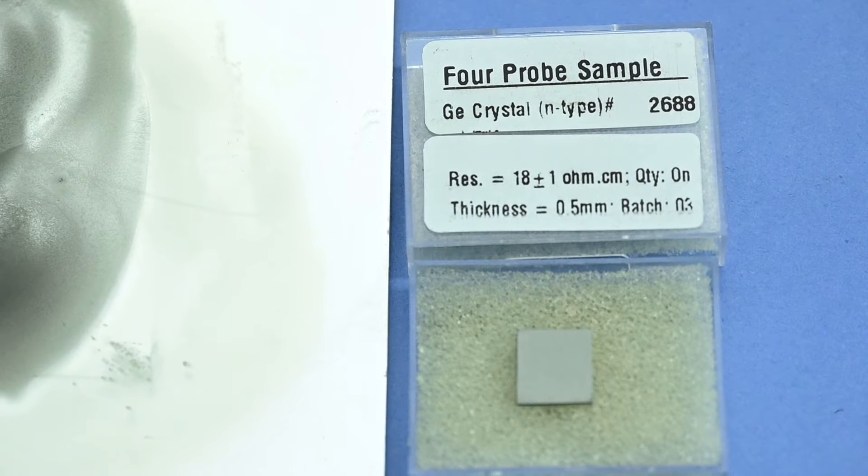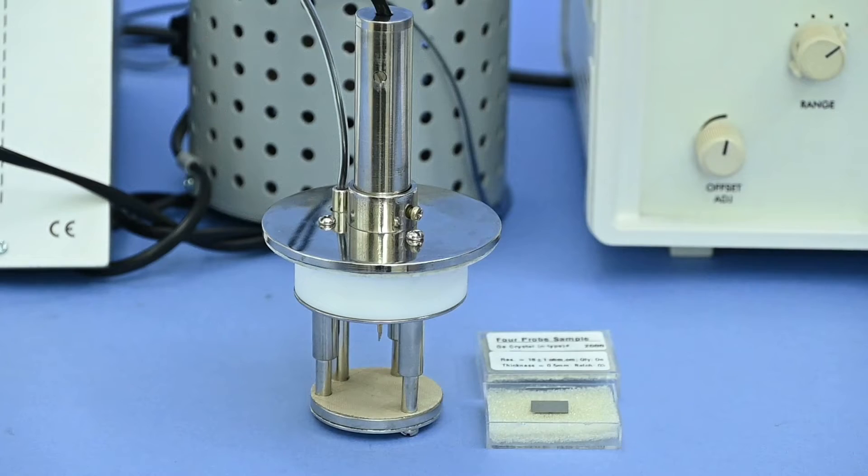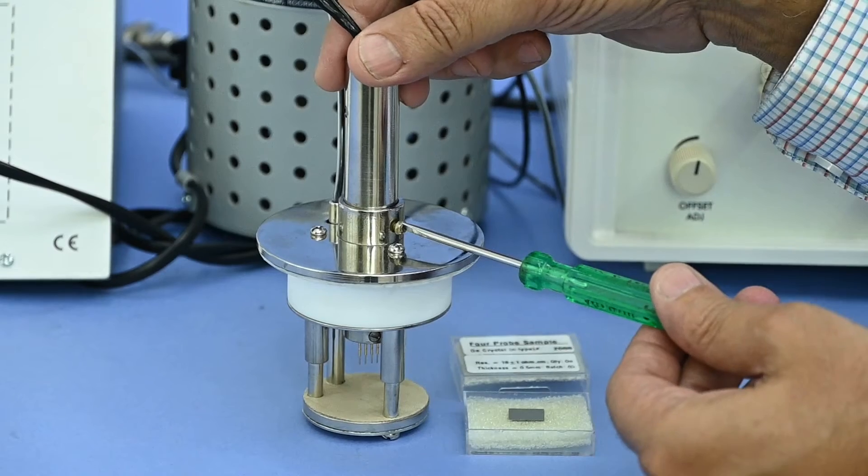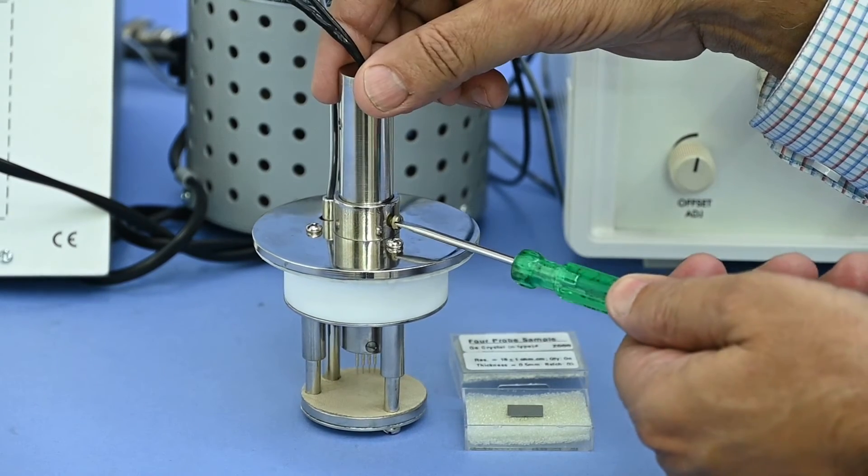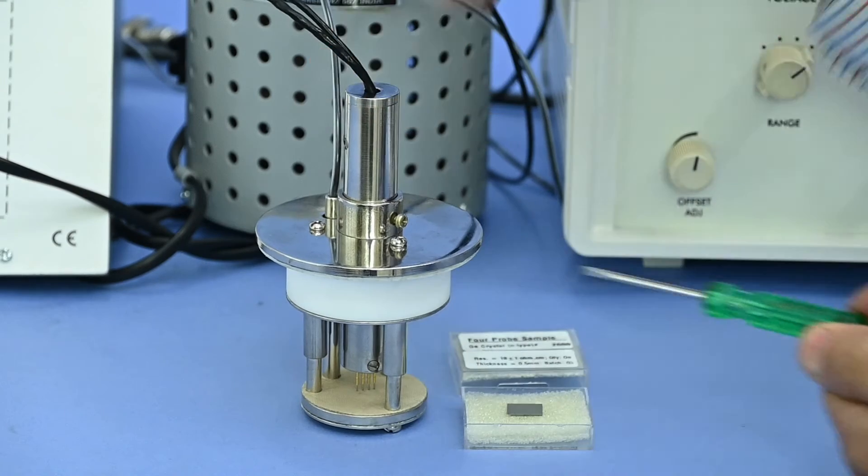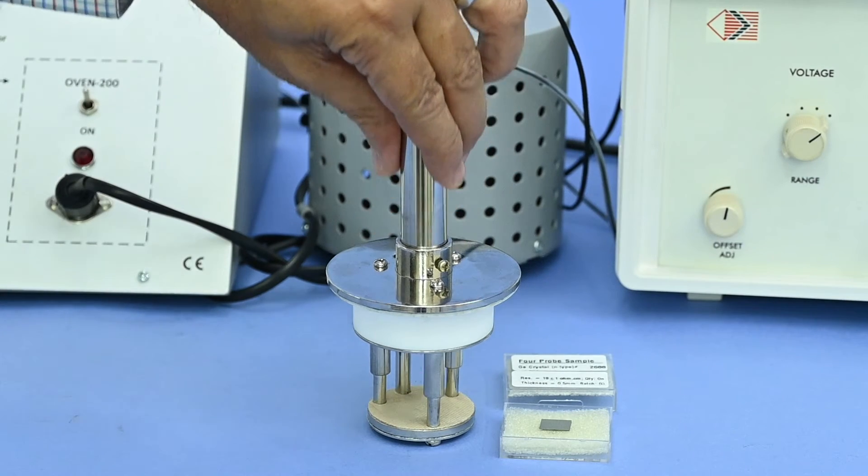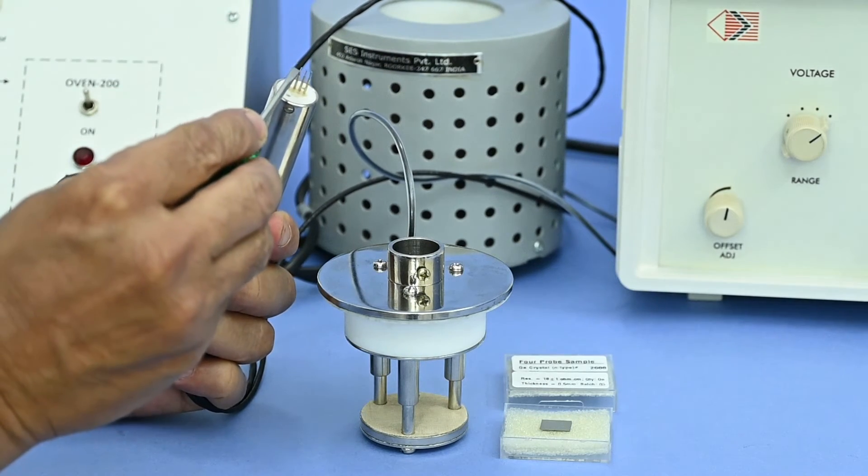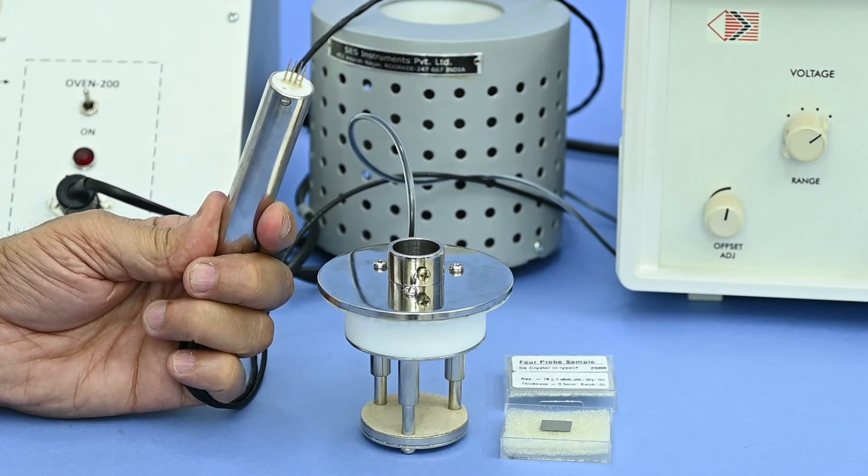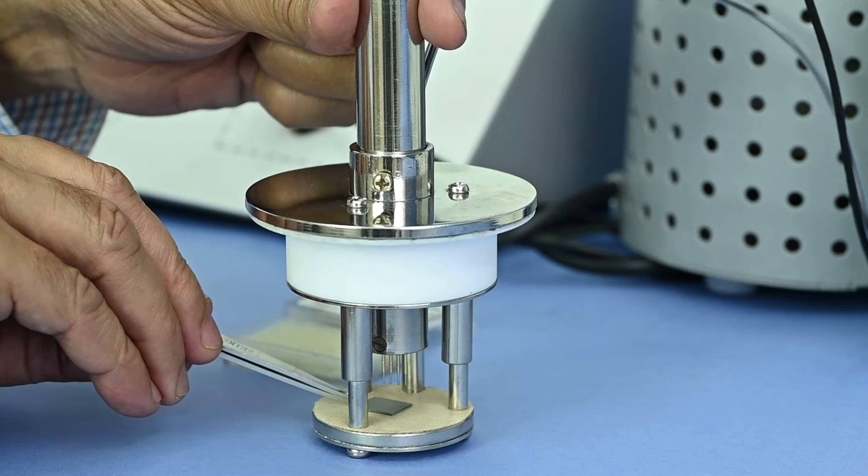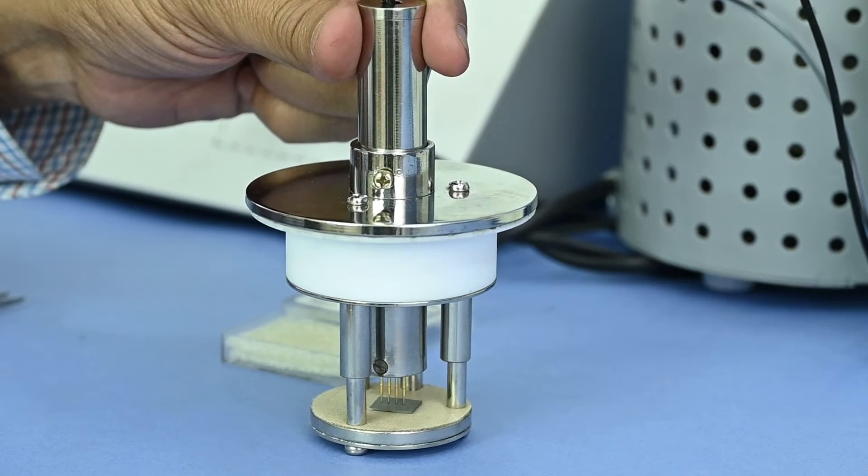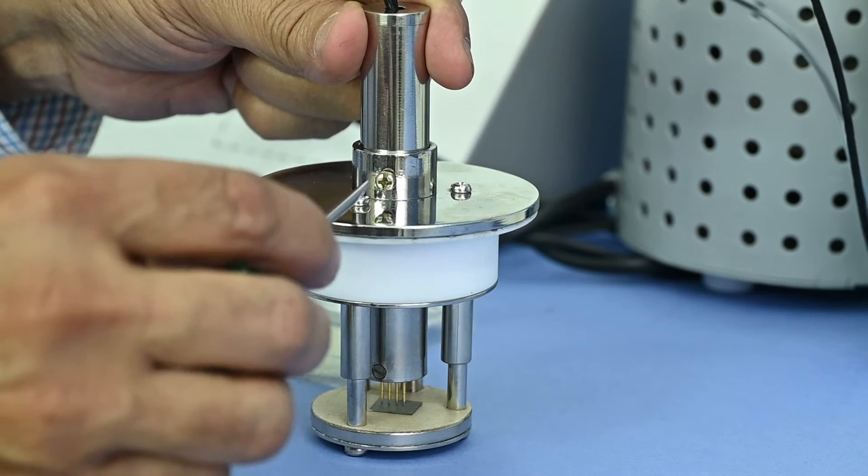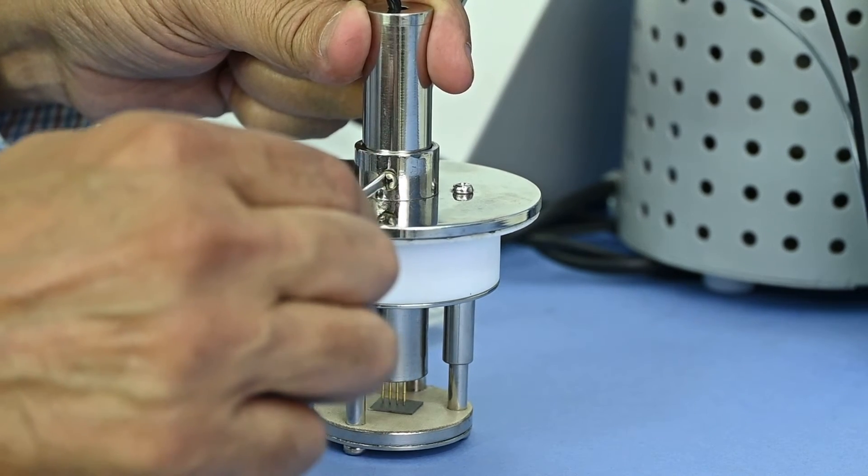Now it is ready to use. Try germanium N-type sample first. Unscrew the four pin pipe from the arrangement. Take out the pipe and check the four pin movement. Place the sample on the base plate. It should be center of the four pins. Press the four pins very gently and tighten it by the screw.